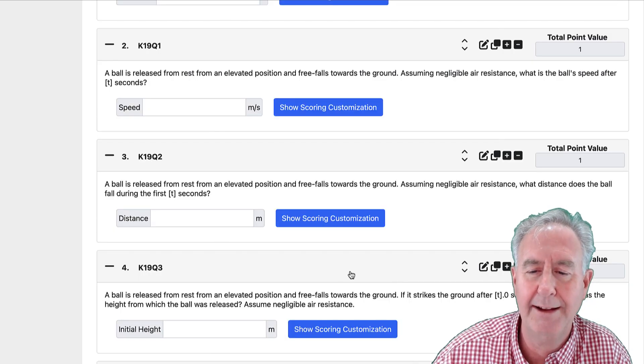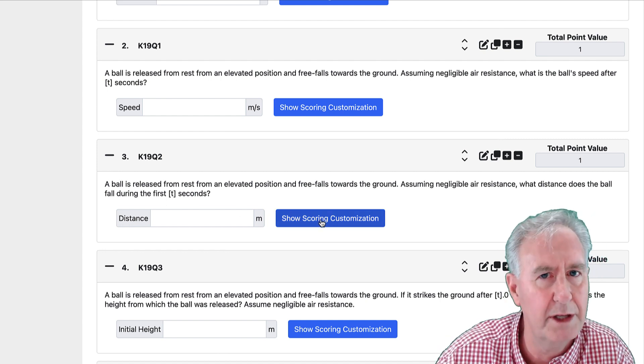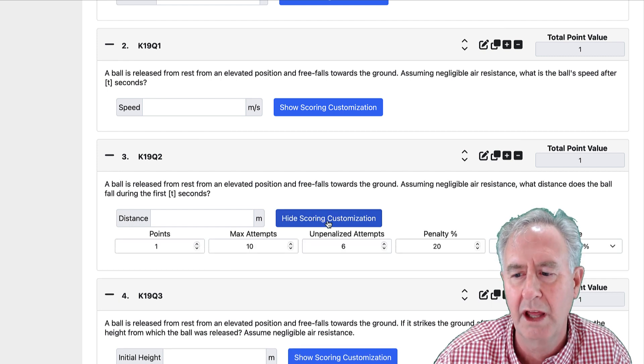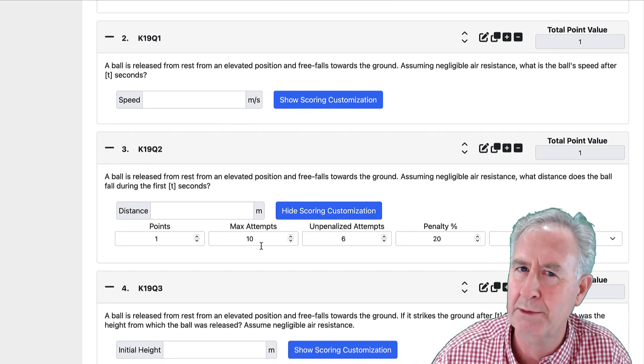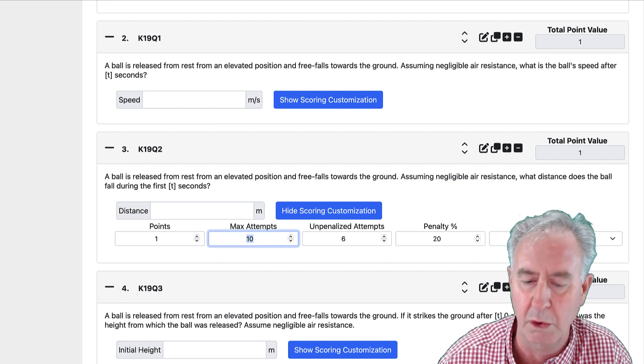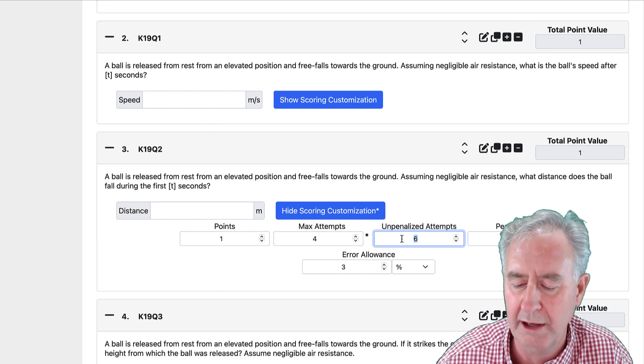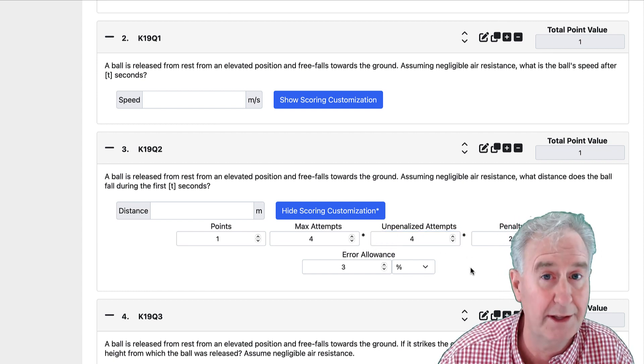Then I notice this problem three. I've talked about this a million times. So I'm going to click on the show scoring customization. And I'm allowing 10 attempts on every problem. But, you know, this one, I'm just going to give you four. I mean, I discussed it so much. You should get it done in four. I'll make them all unpenalized, and that's it.